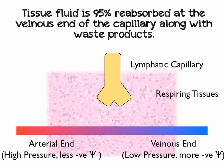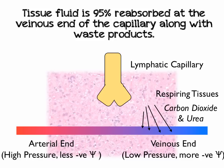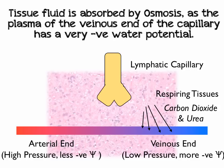So what's going to happen? Well, 95% of tissue fluid is reabsorbed at the venous end, along with waste products from respiration and other metabolic processes like urea. Carbon dioxide and urea are reabsorbed, along with 95% of the tissue fluid, at the venous end of the capillary. This occurs by osmosis, because the plasma of the venous end has a very negative water potential compared to the tissue fluid.